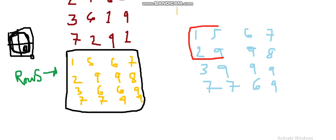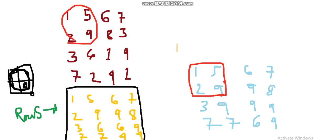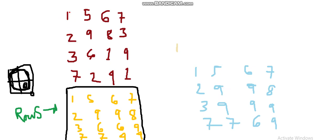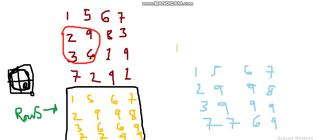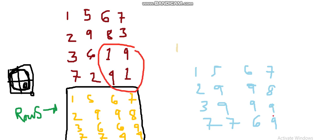We can verify: for the 2x2 sub-matrix ending at position (1,1) — containing [1, 5, 2, 9] — the maximum is 9. For the next position the sliding window maximum is also 9. For another 2x2 window the maximum is 8. And for yet another it is 9. Each result can be read directly from the final computed matrix.